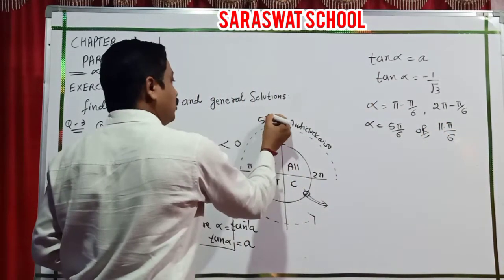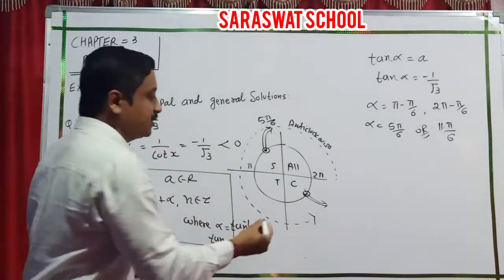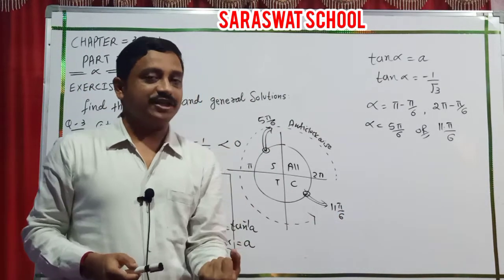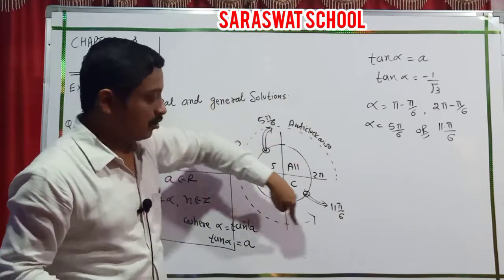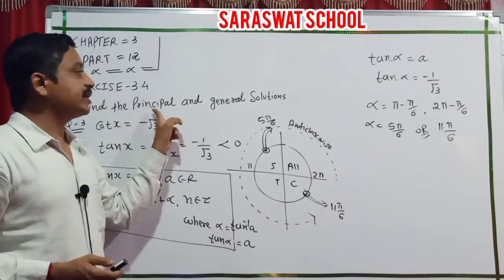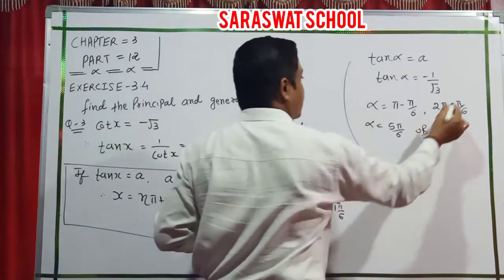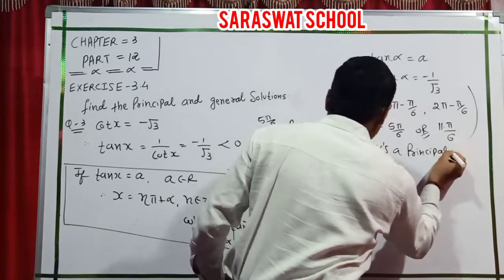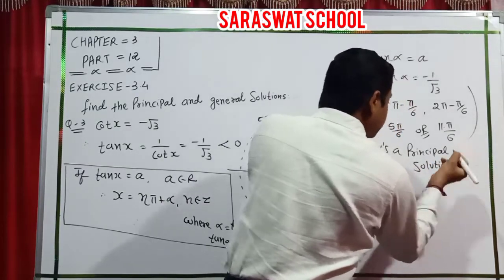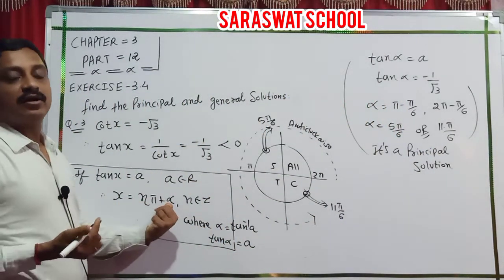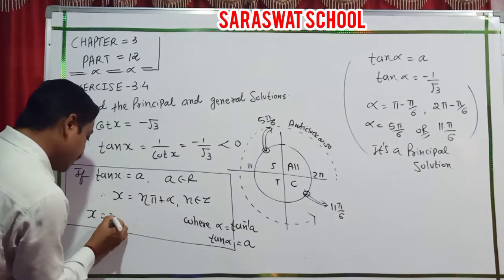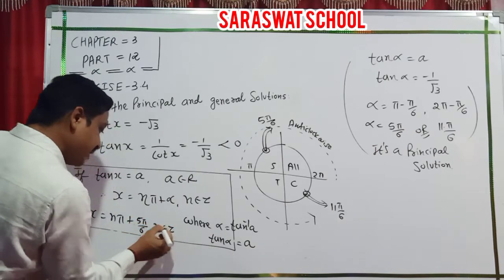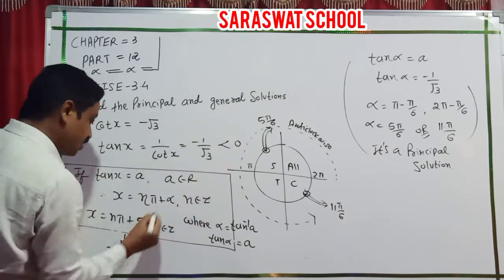These are the final values for the principal solutions: 5 pi by 6 and 11 pi by 6. Principal solutions are called that because the degree is under 360 — only one rotation covered anticlockwise. For the general solution, we apply the least angle: x equals n pi plus 5 pi by 6, where n belongs to Z.